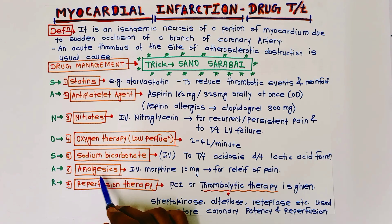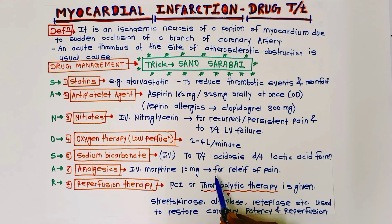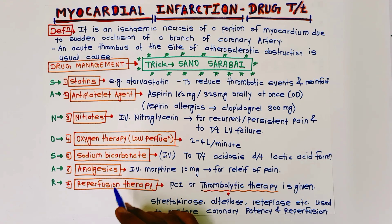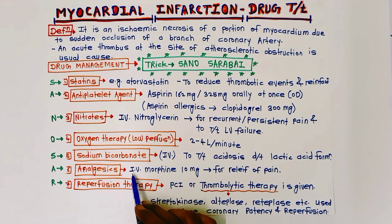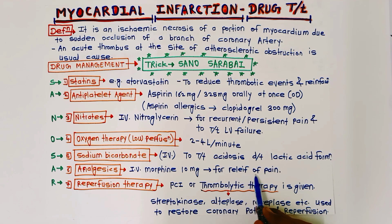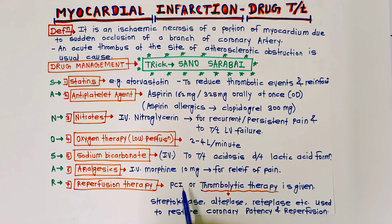A for analgesics: intravenous morphine 10 mg is given for the relief of pain. Analgesics means pain relievers, and in myocardial infarction the main presenting feature is pain, so morphine is given for its relief.